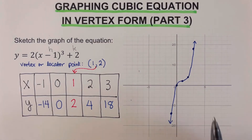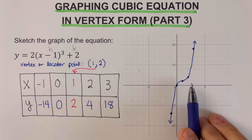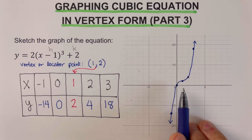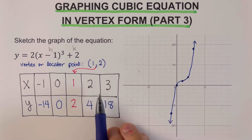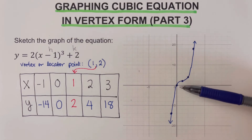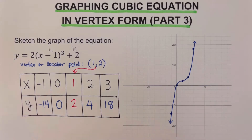The graph goes toward positive infinity on the right side of the x-axis and toward negative infinity on the left, going up to positive infinity and down to negative infinity. This tells us that the domain for this graph is all real numbers, and the range is also all real numbers.